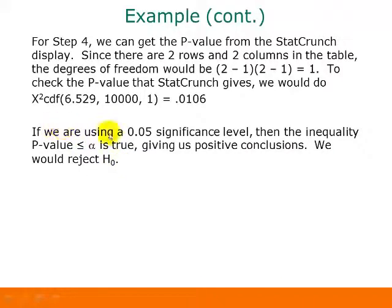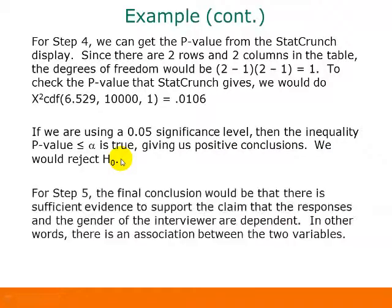For our initial conclusion at a 0.05 significance level, since 0.0106 is less than 0.05, we reject the null hypothesis. Our final conclusion is that there is sufficient evidence to support the claim that the responses and the gender of the interviewer are dependent — there is an association between the two variables. One important caution: the fact that there's an association between the two variables does not mean that one causes the other.